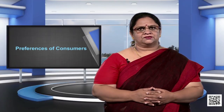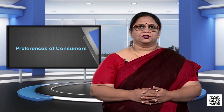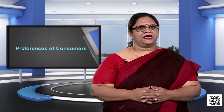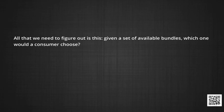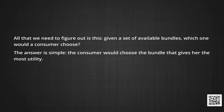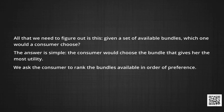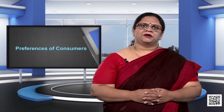In this module, we start with a description of what makes me prefer one bundle of commodities over another. We keep the Marshallian assumption that consumers consume because commodities give them utility. What we reject is the idea that this utility can be measured. In fact, we don't need to measure utility to analyze consumers' behavior. All we need to figure out is: given a set of available bundles, which one would the consumer choose? The answer is simple — the consumer will choose the bundle that gives her the maximum utility. We ask the consumer to rank all available bundles in order of preference. Let us go back to the bundles of movies and books we were examining in the module on budget constraints.